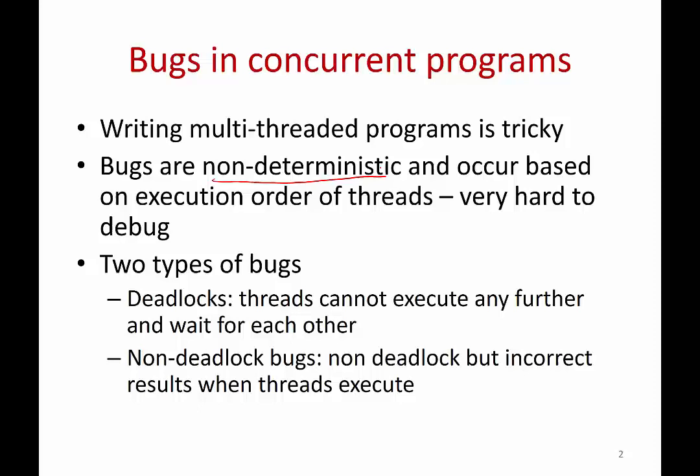There are roughly two types of bugs in concurrent programs. The more dangerous kind are deadlocked bugs, where multiple threads get into a state where they cannot execute anymore and the program freezes. The other type are non-deadlocked bugs, where the program doesn't freeze but threads may crash or produce unexpected results — for example, the simple counter increment example without locks where the counter value was not what you expected.